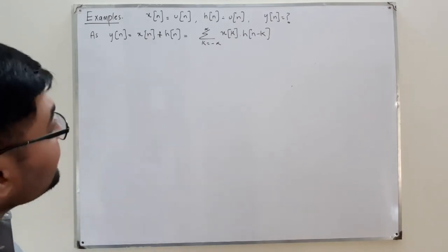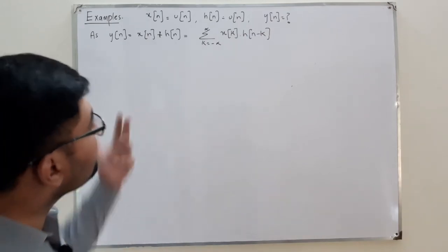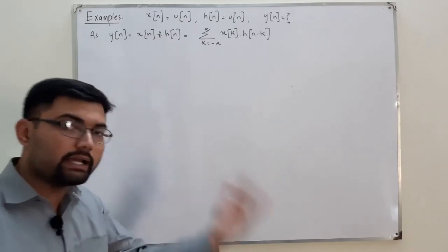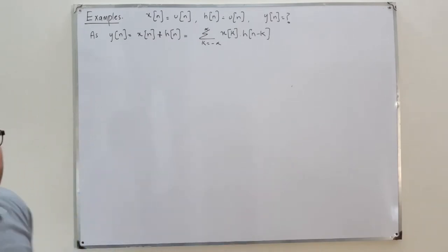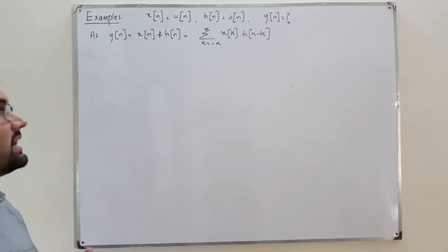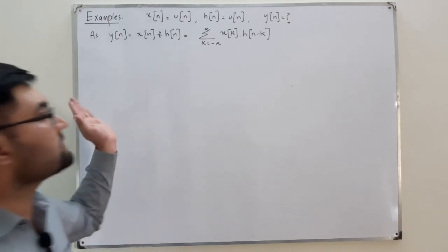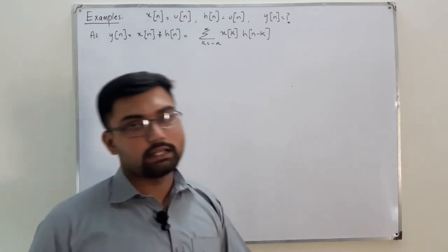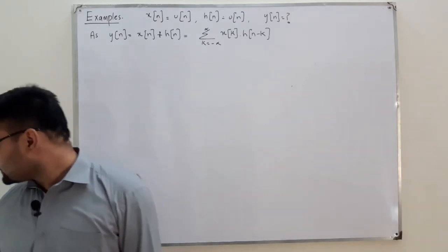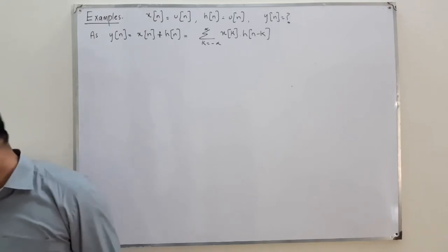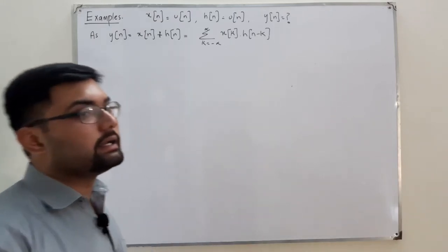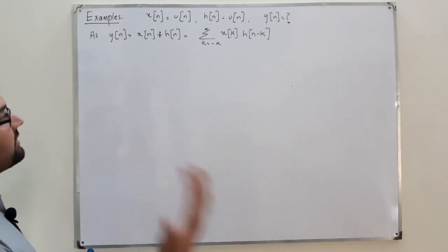Basically you have to find x(k) and h(n minus k), and then find the overlap — that is, the product for different shifted versions of h(k). Step number one is to change the variable: find x(k) and find h(k).